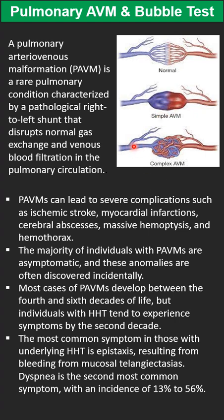Pulmonary AV malformation can be congenital or sporadic. Congenital is usually associated with hereditary hemorrhagic telangiectasia, or HHT. Sporadic cases are usually isolated without that association. Most cases of pulmonary AV malformation are asymptomatic and usually become symptomatic around the fourth to sixth decade of life, but in hereditary cases, especially severe and significant ones, it can present in childhood.